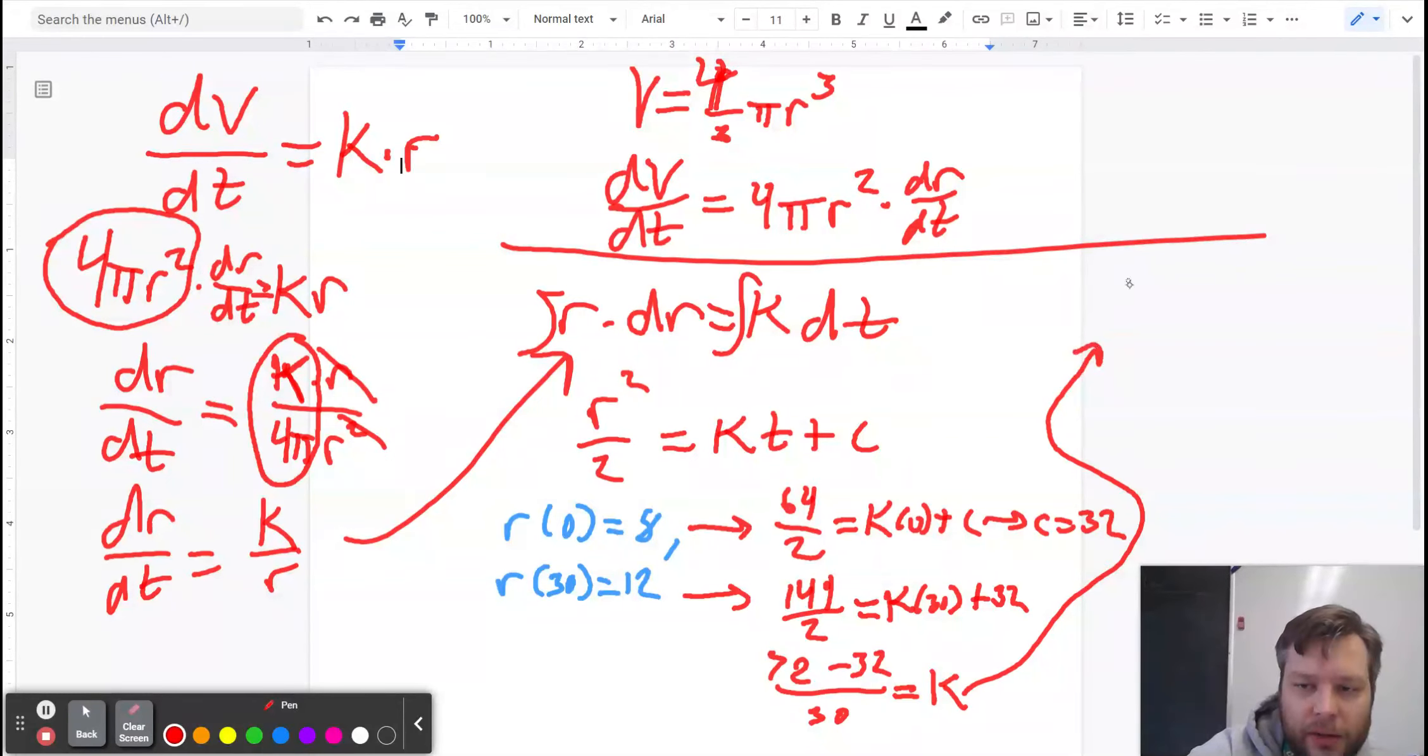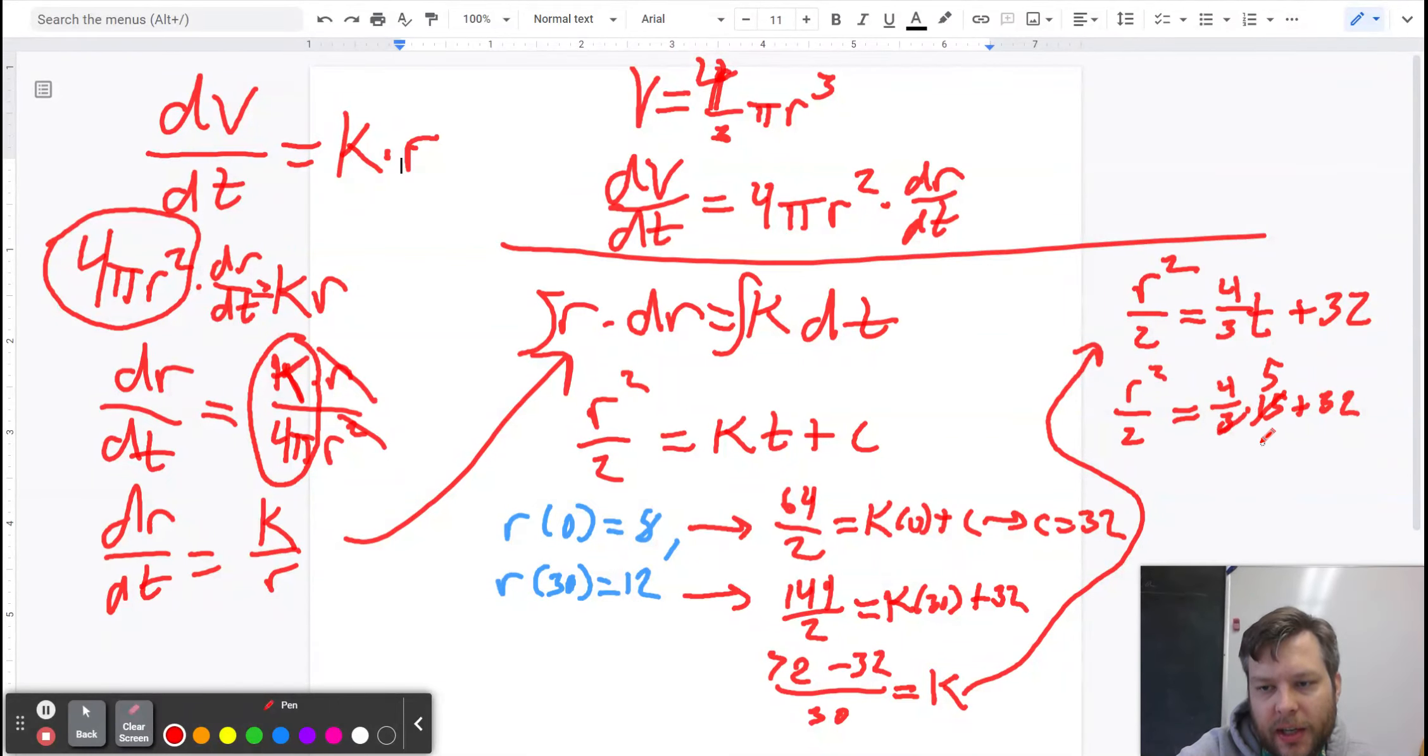Alright, so here's our model then. r squared over two equals 40 over 30, so four thirds t plus 32. And then they ask the radius after 15 minutes. So let's just plug in 15. r squared over two equals 4 thirds times 15 plus 32. 3 goes into 15 five times. 20 plus 32.